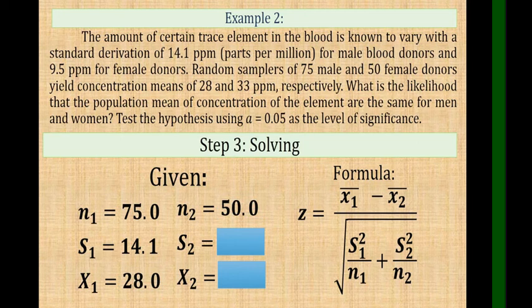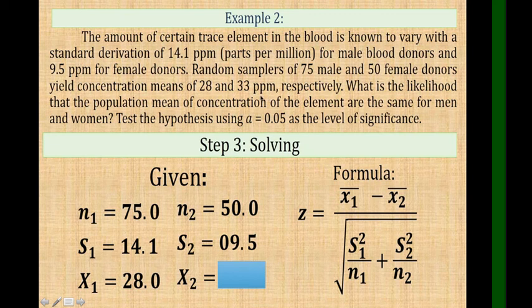For n2, we have 50 female. The s2 or standard deviation of female is 9.5, and it has 33 ppm for the concentration mean.